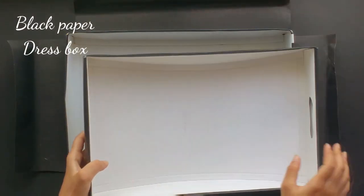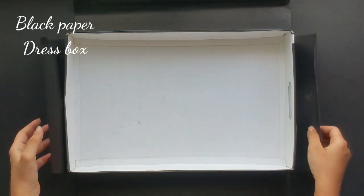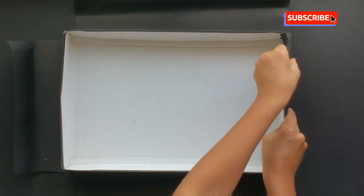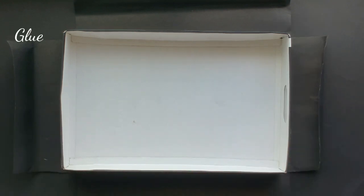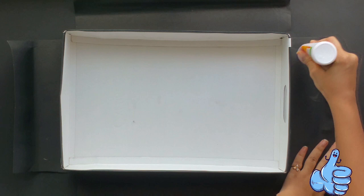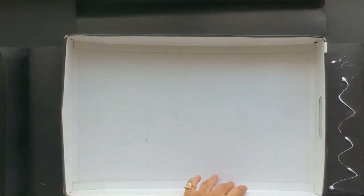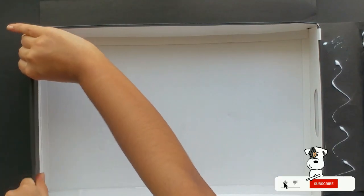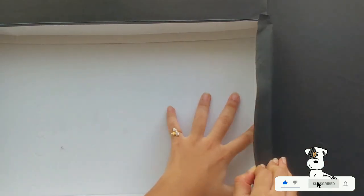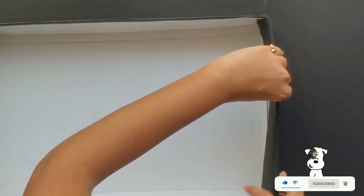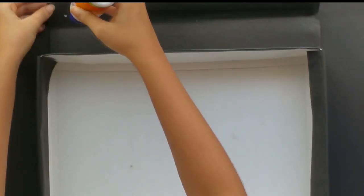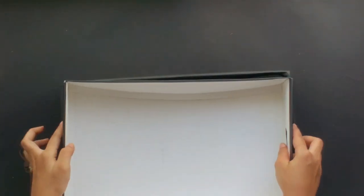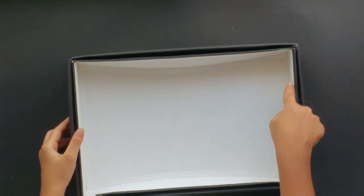So here I took a dress box and black paper and now I'm going to cover the box using glue. So now I completed covering the box. So now the second box I'm going to cover only at the front side using black paper.